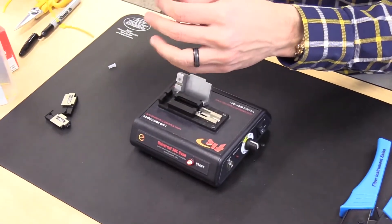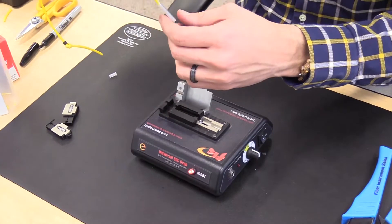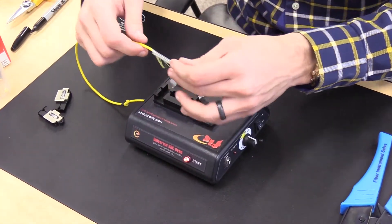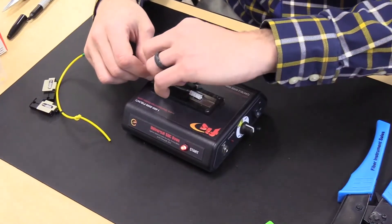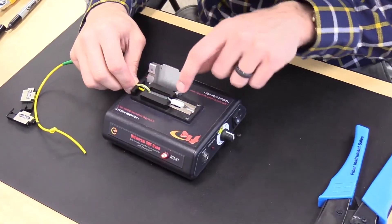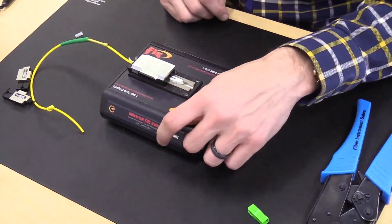While securing the Kevlar, slide down the splice sleeve so it grabs both sides of the 900-micron-type buffer. Place it into the oven. Make sure that the sleeve stays in place, not go over the back end of the connector. Press Start.